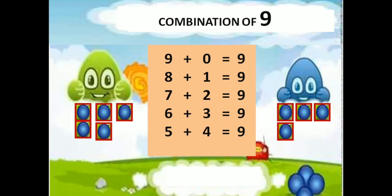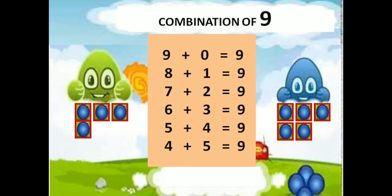Green doll having 5 balls, blue doll having 4 balls — 5 plus 4 equals 9. Green doll having 4 balls, blue doll having 5 balls — 4 plus 5 equals 9.